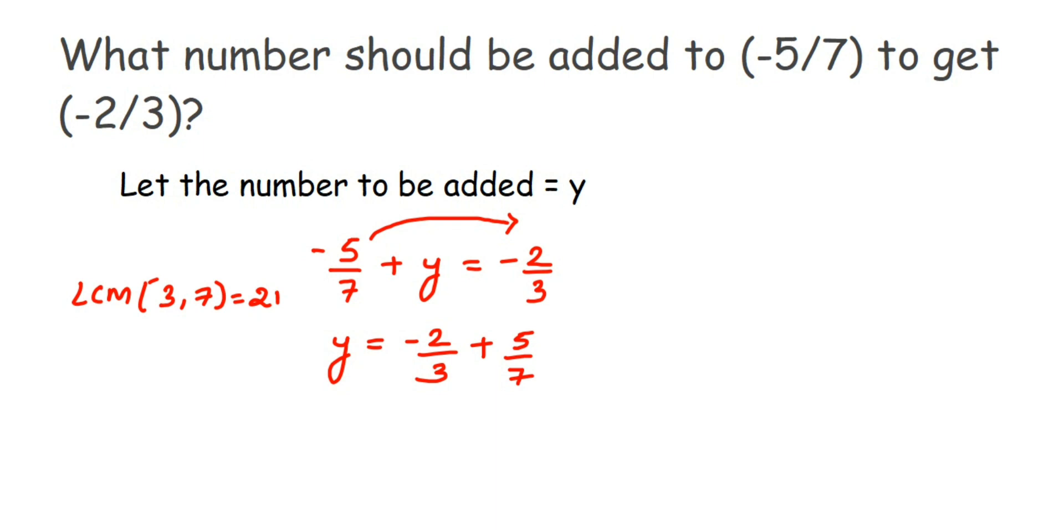After taking the LCM, we have to make the denominators the same. We're going to use equivalent rational numbers. For -2/3, we want to make the denominator 21. What should we multiply 3 by to get 21? We know that 3 × 7 = 21, so multiply 7 in both the denominator and the numerator.